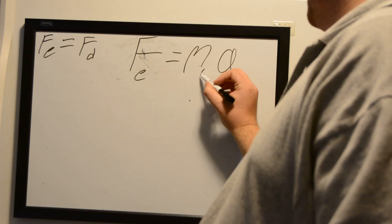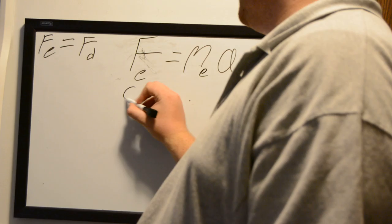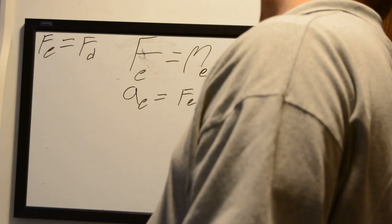Whoops, those are supposed to be earth, these little subscripts here. Anyway, so we're looking for the acceleration of the earth towards the diver. So we can just manipulate this equation to be that acceleration is equal to force divided by mass.